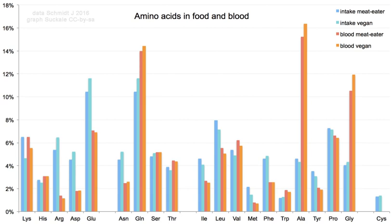In amino acids that have a carbon chain attached to the alpha carbon, such as lysine, the carbons are labeled in order as alpha, beta, gamma, delta, and so on. In some amino acids, the amine group is attached to the beta or gamma carbon, and these are therefore referred to as beta or gamma amino acids.